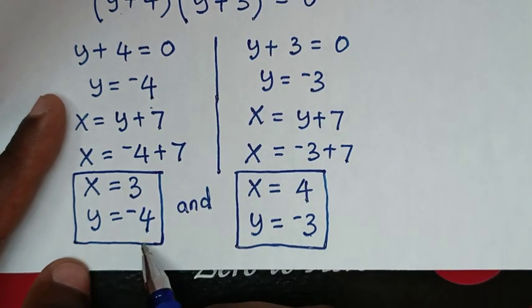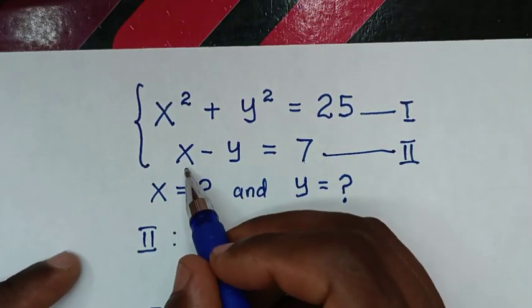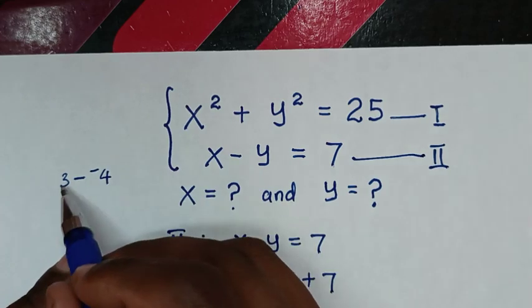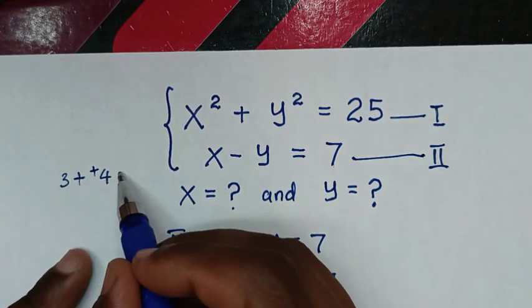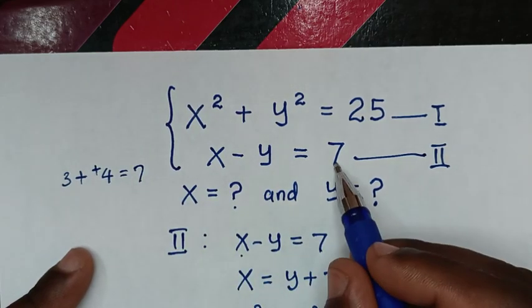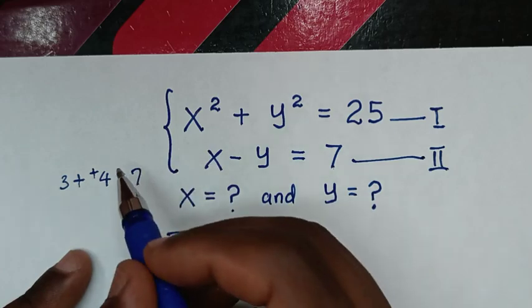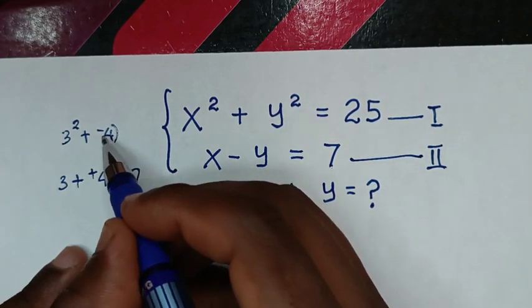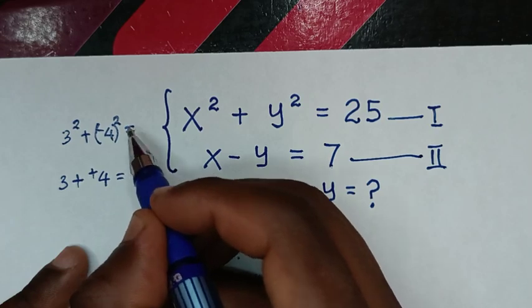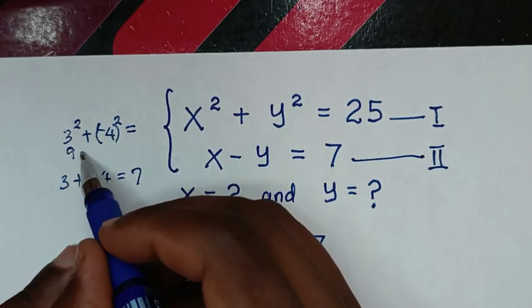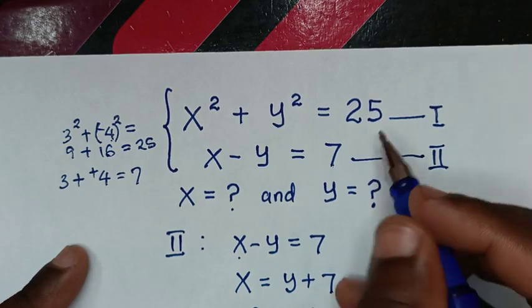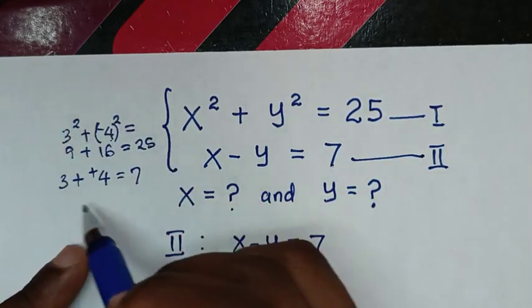To verify the first solution (x equals 3, y equals negative 4): checking equation 2, x minus y is 3 minus negative 4 equals 3 plus 4 equals 7, which is correct. Checking equation 1, x squared plus y squared is 3 squared plus negative 4 squared equals 9 plus 16 equals 25, which is correct. The first solution is verified.